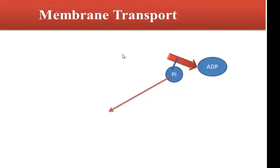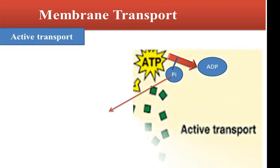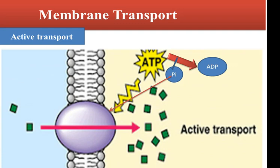Now, active transport — as I said before — needs energy. In the cell, energy is stored as ATP, adenosine triphosphate, and it requires carrier channels. These channels open and close using energy, so ATP is split to ADP, adenosine diphosphate, releasing one phosphate molecule. This is the source of energy to open the channel and allow molecules to enter or leave the cell.